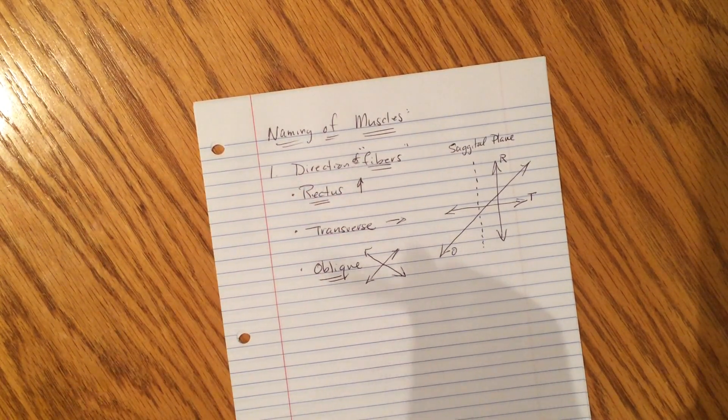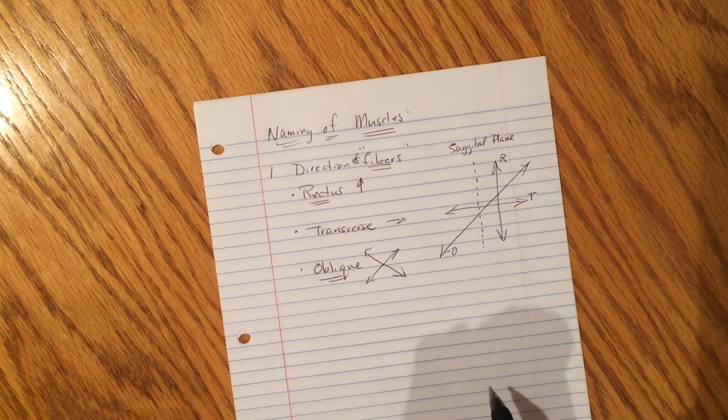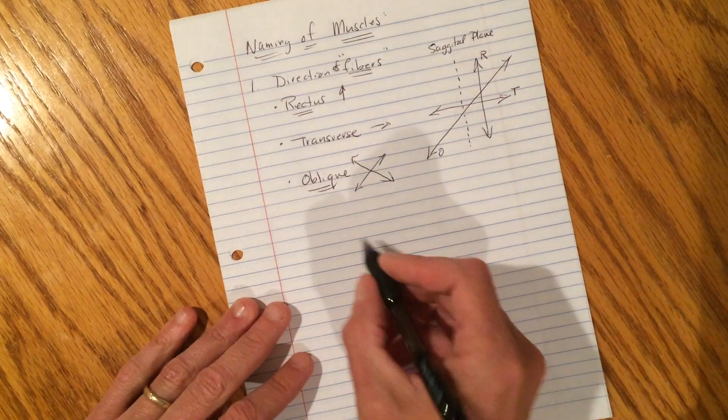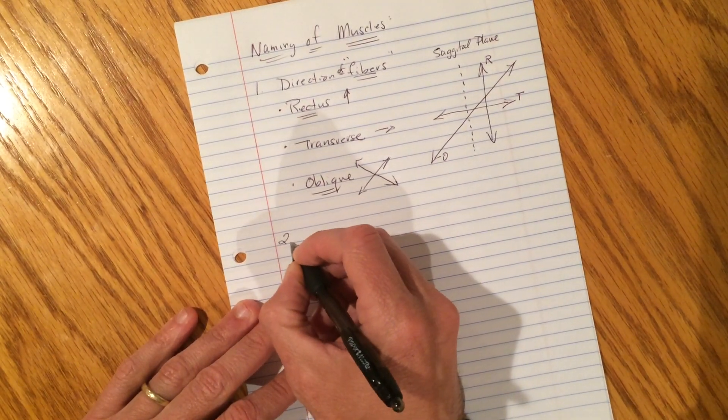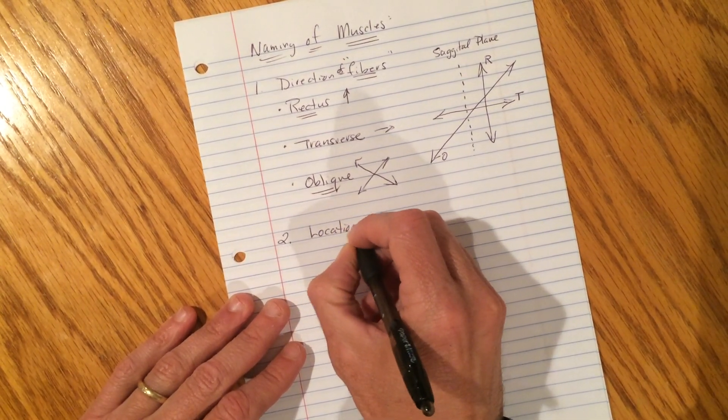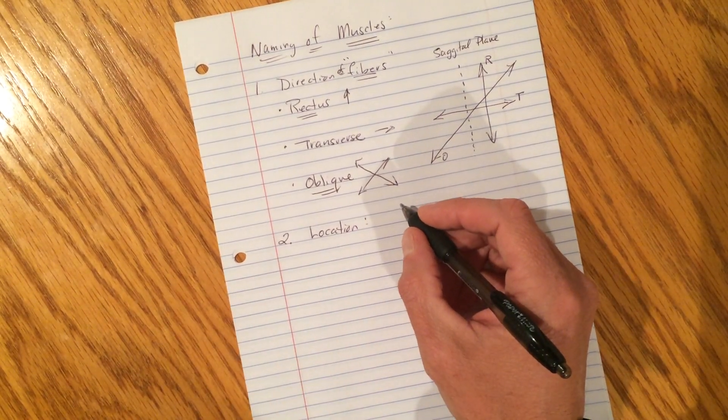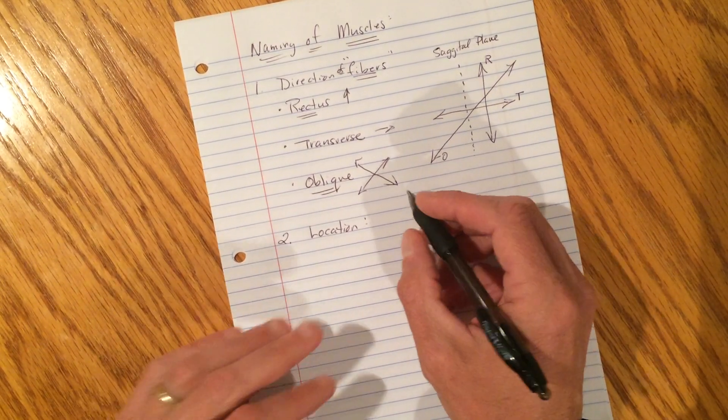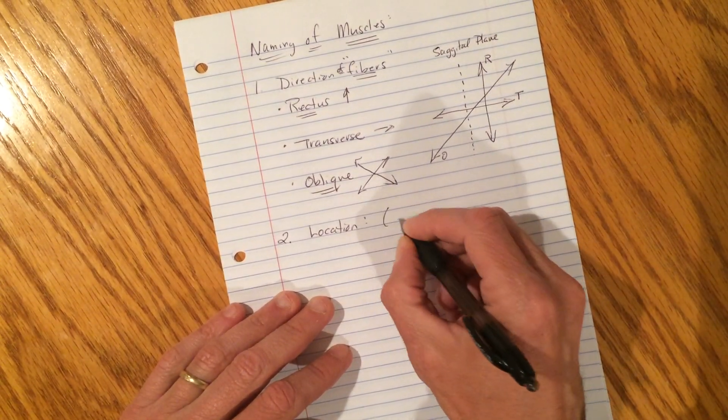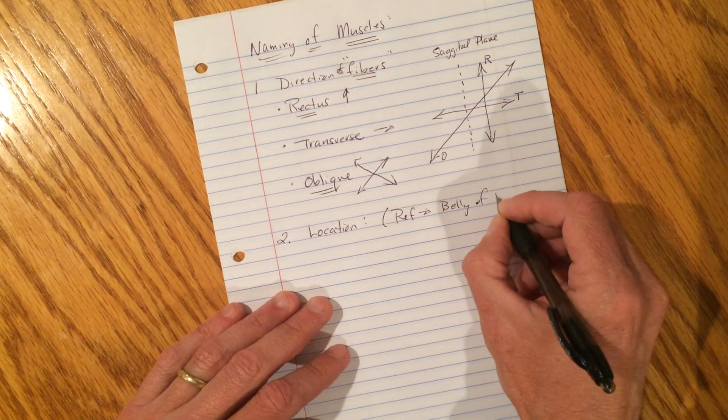And that's the nice thing about muscle naming is that every single muscle name tells you something about the muscle. And in some cases, it tells you everything you need to know. We'll go over that as we get into them. Number two, some muscles are named for their location. Now, when muscles are named, if they're named for location, it's always with reference to the belly of the muscle.